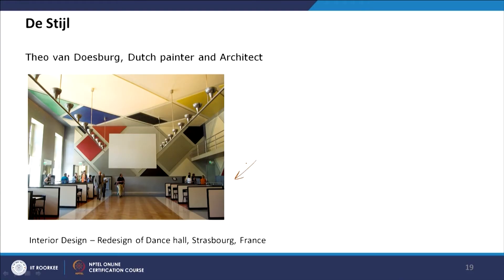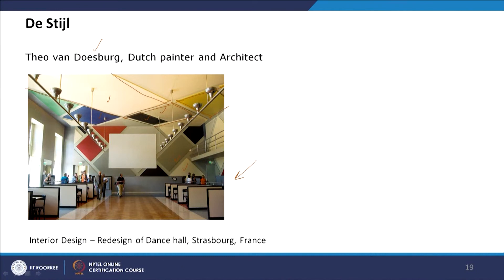This is Doesburg's design for a dance hall in France — one of the few interior designs he completed. Here you will see elements added on top of the ceiling as ornamentations that have no functional value but are just to decorate the wall. The same color palette is used, but these elements do not have functional value — they are purely for form, art, and aesthetics. This again demonstrates the difference between the De Stijl movement and Bauhaus.